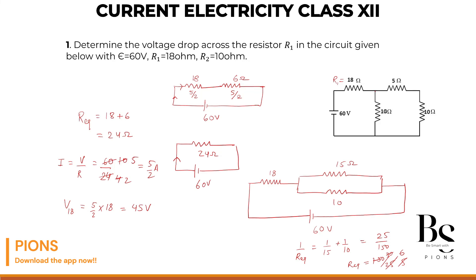Though they asked only for 18, let me do it for the second half also. Voltage for 6 ohm will be 5 by 2 times 6 ohm. So 2 threes are 6, 3 fives are 15 volts.